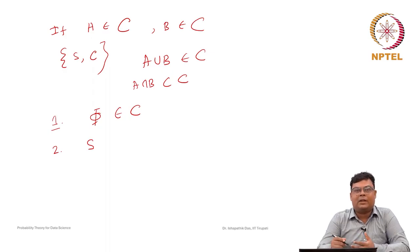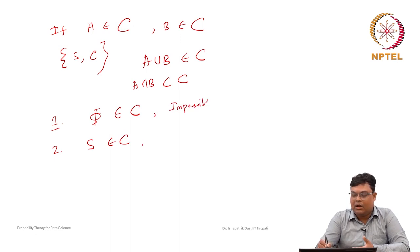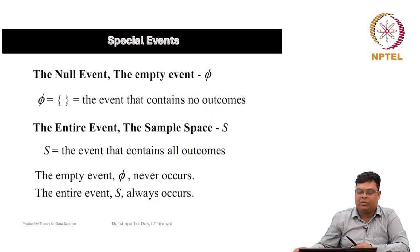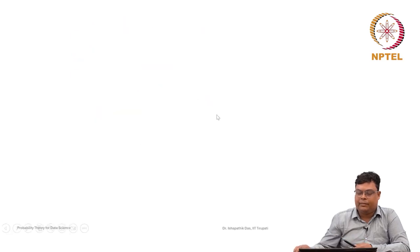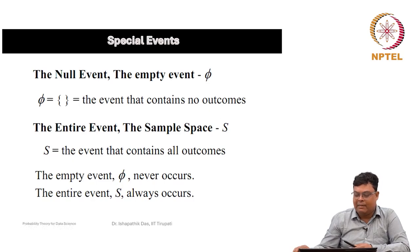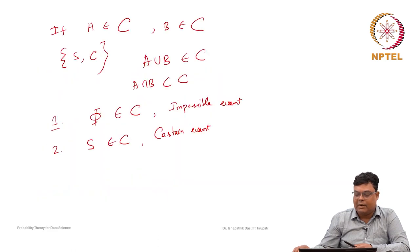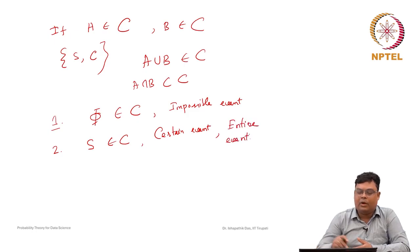Whatever happens, whenever you do the random experiment, S must happen all the time. So S is also in C, so it is an event. S is known as the certain event or entire event. The null event phi is also called the empty event — the event containing no elements — while S, the certain event, always occurs and is also called the entire event.